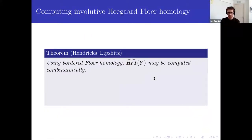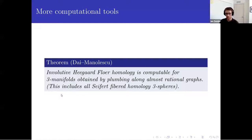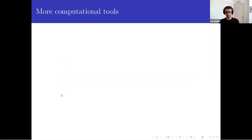Another computational technique: Hendricks and Lipschitz computed the hat version of involutive Heegaard Floer homology combinatorially using bordered Floer homology of Lipschitz, Ozsváth, and Thurston. They also proved an exact sequence — the kind you might expect from ordinary Heegaard Floer homology — but only on the hat version, where you set U equal to zero. Another really useful result for computations is a theorem of Dai and Manolescu, where they computed involutive Heegaard Floer homology for three-manifolds obtained by plumbing along almost rational graphs, which includes all Seifert fibered homology three-spheres. It gives you a lot, but not everything, and it's still helpful to have the mapping cone formula in general.